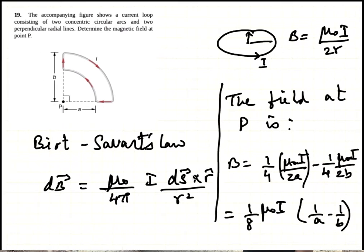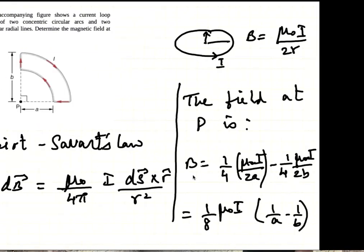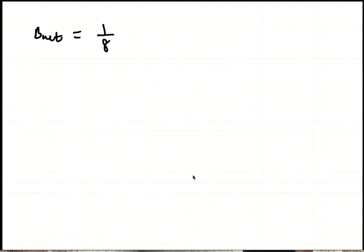So the net field is one-eighth μ₀I times (1/a minus 1/b).